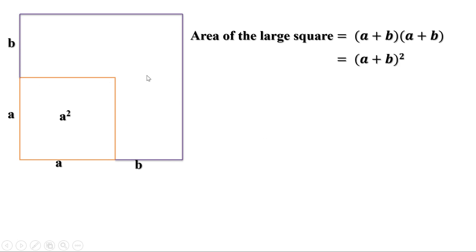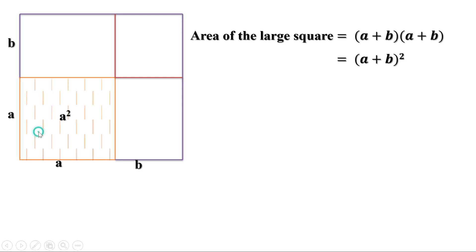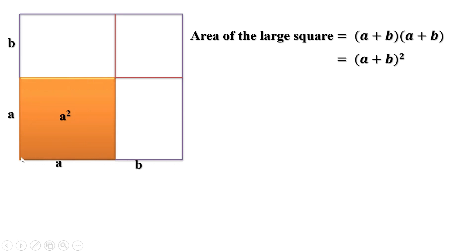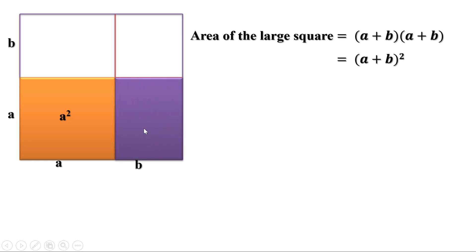We can find the area of this large square another way. Let us extend the sides of the first square to divide the large square into four parts. We can find the area of each part and add them together. The first part is the original square with area a². The next part is a rectangle with sides a and b, so its area is a × b = ab.